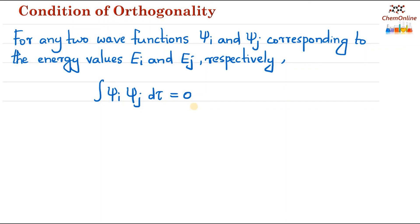The orthogonality condition is ∫ψᵢ · ψⱼ dτ = 0, or equivalently ∫ψ* · ψ dτ = 0. All of these represent the condition of orthogonality.